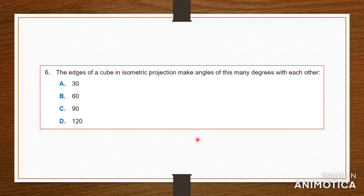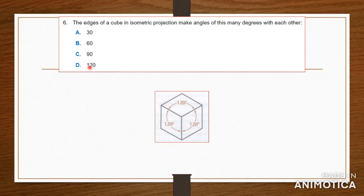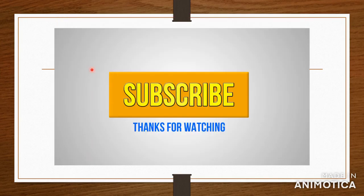Number six again: the edge of a cube in isometric projection makes angles of how many degrees with each other — is it 30, 60, 90, or 120? If you look at the cube below and draw an isometric drawing, the angles between them would be 120 degrees. As you can see, they are equally spaced apart, and that angle is 120 degrees.